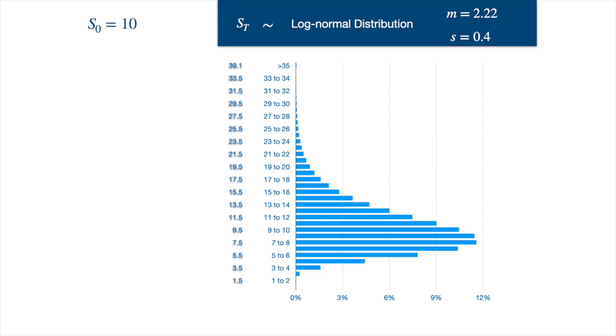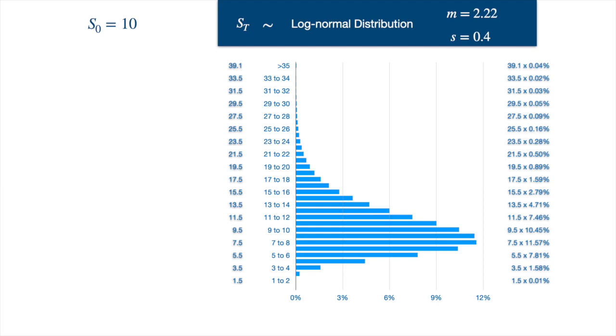Notice the average of the values above 35 is equal to 39. As we saw earlier, the price can go up to infinity, but the probability declines with increasing price, so the effective average comes out to be 39. Now to calculate the average price, we just multiply the average value by the respective probability, and if we sum all of these, we'll get 10, which is the current stock price. Remember, interest rate is 0, so on average we earn nothing.